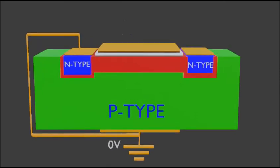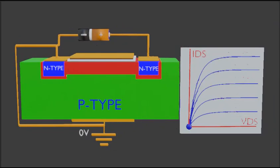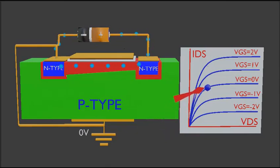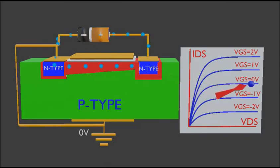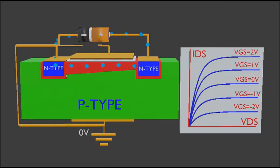Now let's talk about depletion type MOSFET. The only difference is that the depletion type MOSFET has a channel without any gate voltage — this channel is formed during manufacturing. So if we apply voltage VDS without any gate voltage, current will flow between drain and source, as you can see in the graph. On the graph, VGS is zero in this case. If you apply a positive voltage at the gate, ID will increase; if you apply a negative voltage at the gate, ID will decrease, as shown in the graph.